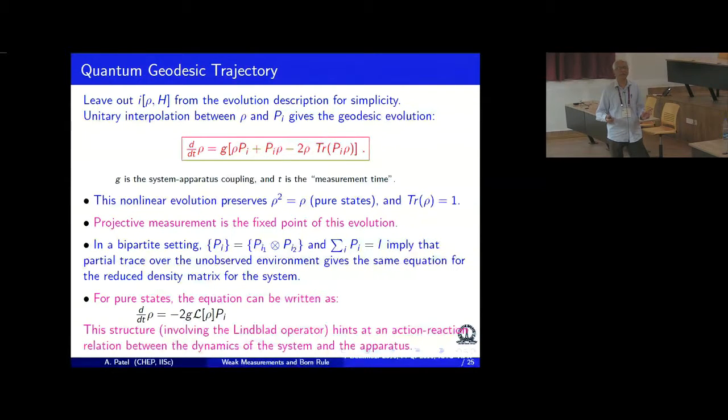For pure state, P is a projection operator and rho is also a projection operator. And what this equation does is actually decoheres the pointer state of the apparatus by the Lindblad formulation. There is no inconsistency in that. And there is a back reaction which produces a negative sign which shows how the system will change in an opposite manner.